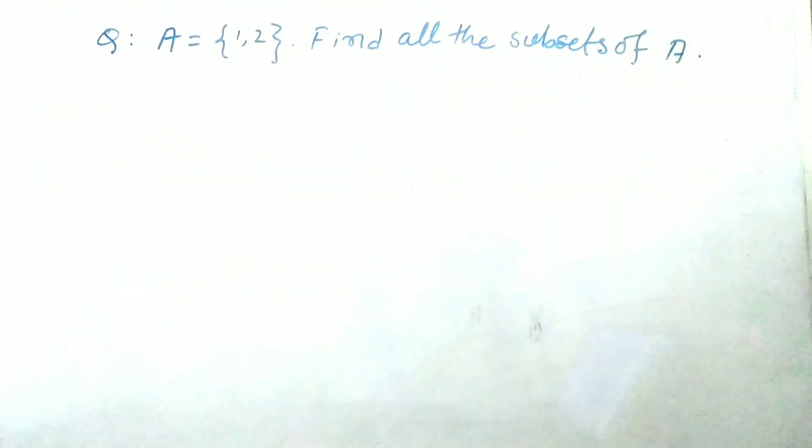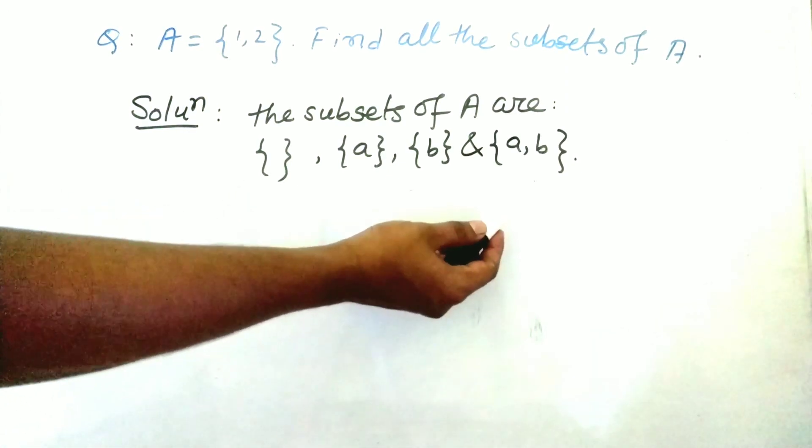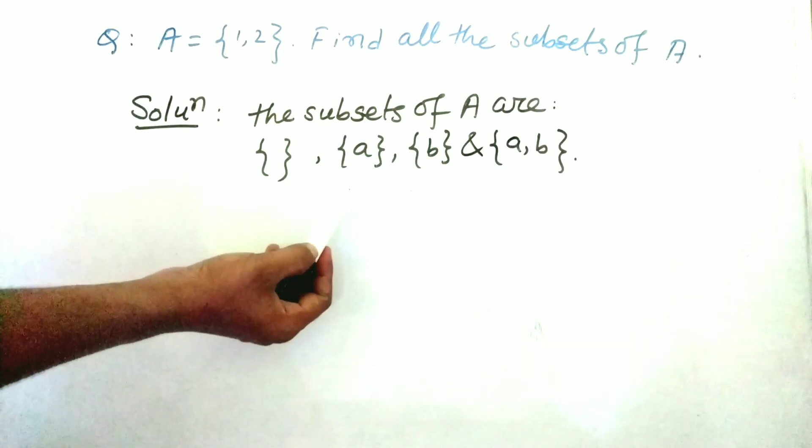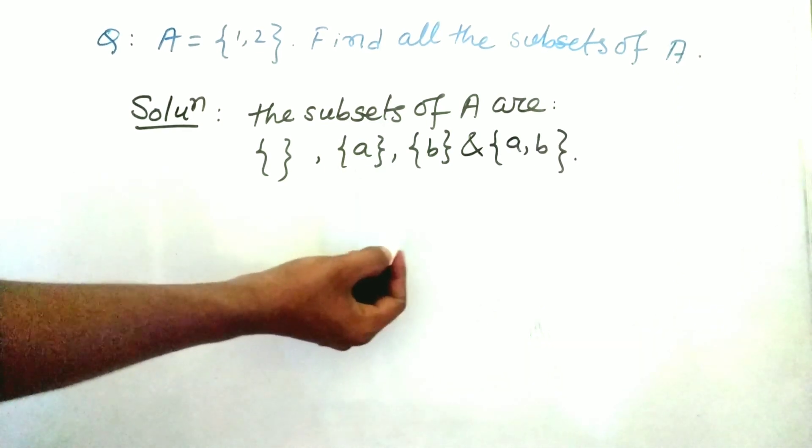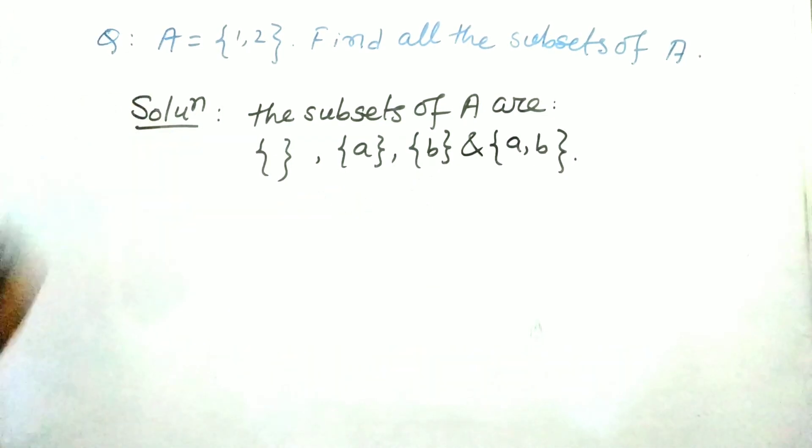Let's go for another question. A is equal to 1, 2. Now find all the subsets of A. So let's go for the solution. The subsets of A are the empty set because we know that empty set is a subset of every set, and A, B that means this set itself is a subset of this set. And if we make a set with the element only A and another set with the element only B, then these two sets will also be the subset of this set A.